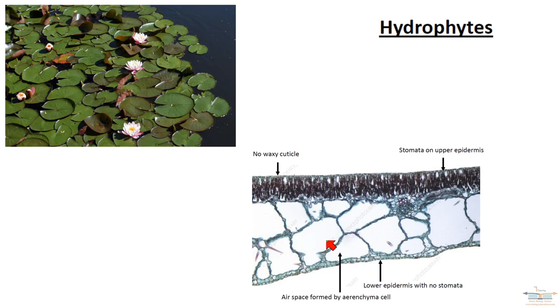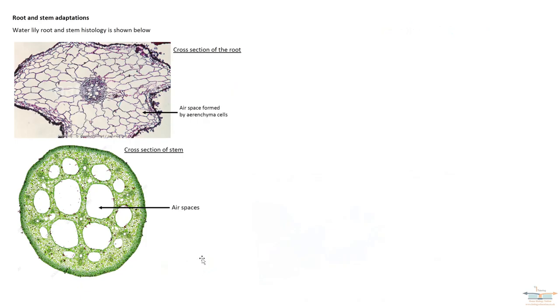Now, the plant will also have adaptations in the roots and the stem as well. So here's some histology now of the root and the stem. The first one, the top image is of a root, and you again have the aerenchyma cells that provide air spaces and therefore buoyancy as well.